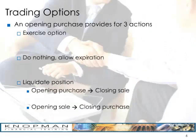Any time an investor buys an option, the investor can subsequently do three things. First, the investor can exercise the option — in this case, we'd exercise and buy the stock. Second, if the investor does nothing, the option will eventually expire on the Saturday following the third Friday of the month. Or third, the investor can liquidate the position.